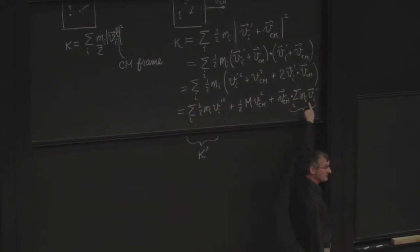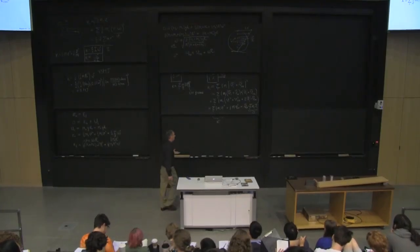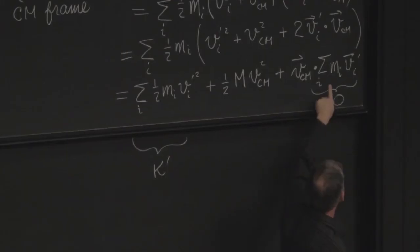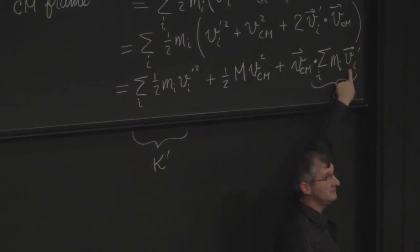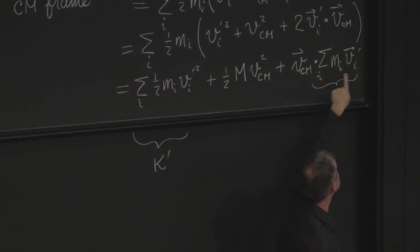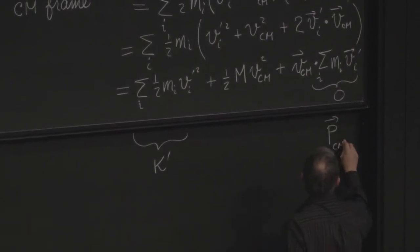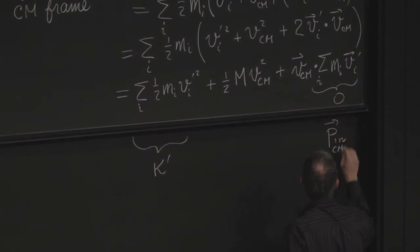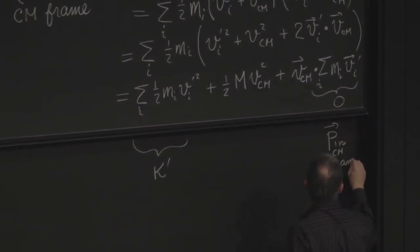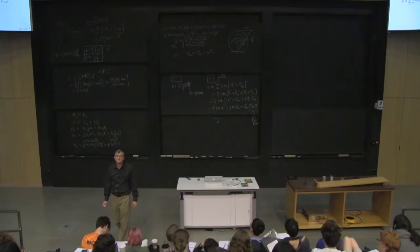And in the center of mass frame, what would be this sum? This is the sum of the momenta in the center of mass frame. It's just the sum of all the momenta. So this would be p total in the center of mass frame. And that's 0. That's how we cooked up the center of mass frame to begin with. Good question.